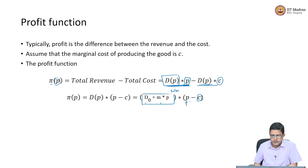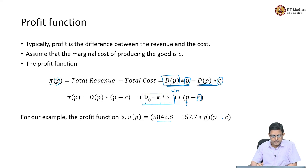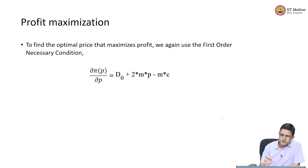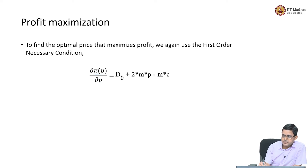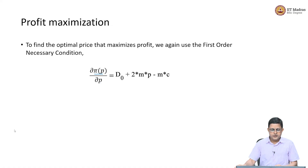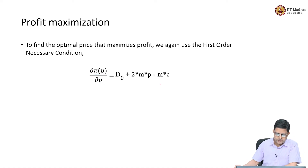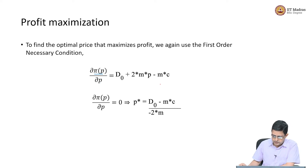Let us simplify this. How are we going to maximize this profit function? Very similar to before — we are going to use the first-order necessary condition. The first-order necessary condition says: take the partial derivative of profit with respect to price and set the partial derivative equal to zero. This gives the partial derivative of the profit function with respect to price. You can verify that this expression is correct. When we set this partial derivative equal to zero, we get the optimal price as this expression.